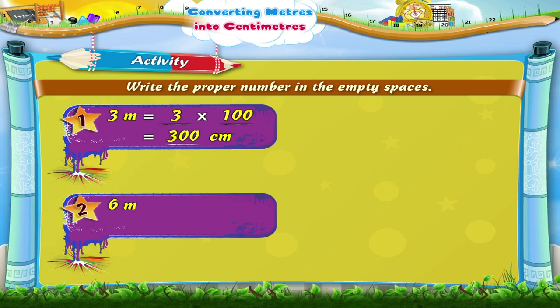6 meters equals 6 into 100, which equals 600 centimeters.